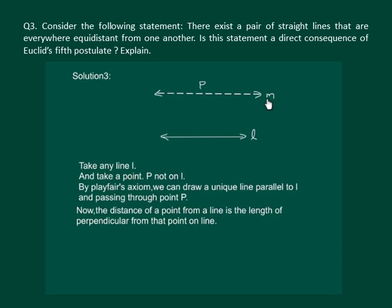We know that the distance of a point from a line is the length of the perpendicular from that point on the line. If we have a point, then the perpendicular drawn gives us the distance of the point from the line.